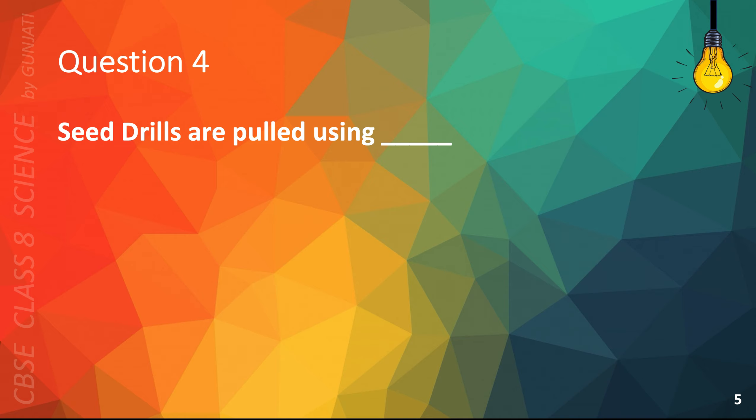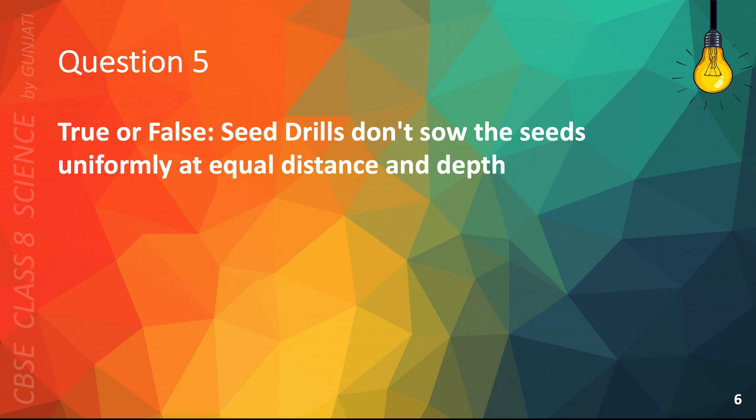Question 4. Seed drills are pulled using A birds, B worms, C tractors, or D men. The correct answer is C tractors.